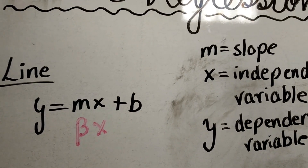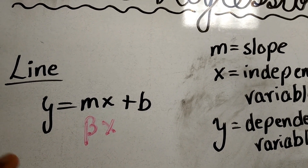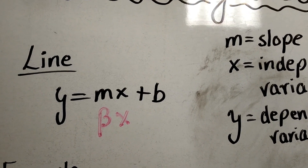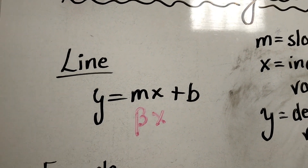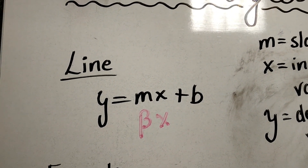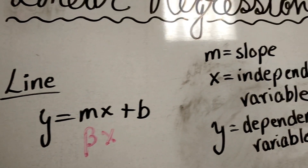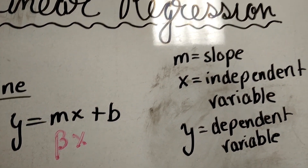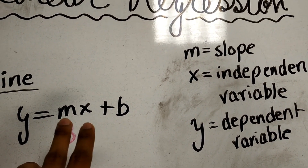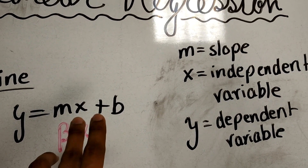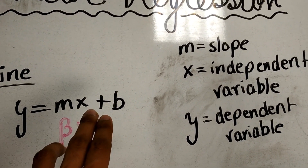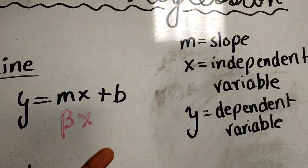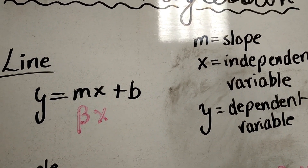I'm going to rewrite this equation by replacing m with beta. Where we have multiple x values, that means we're going to have multiple m values because we have m and x together. So we're going to have m1, x1, and if we have another value of x, let's call it x2, we'll have m2, x2, and so on and so forth.